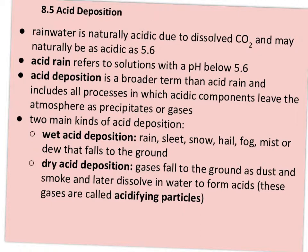There are two main kinds of acid deposition. There's wet acid deposition, which you probably know mostly as acid rain, but it could include sleet, snow, hail, fog, mist, or dew — any kind of wet precipitation that ends up on the ground. Then there's dry acid deposition, where gases fall to the ground as dust and smoke and later get dissolved in water to form acids. These gases are also known as acidifying particles because when they combine with water, that's when they make the acidic deposition.